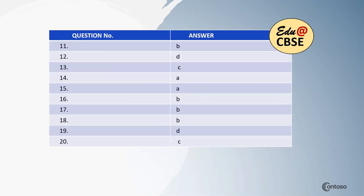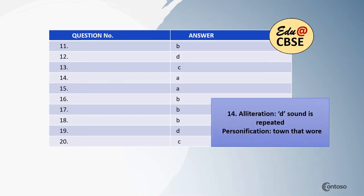These are the answers from 11th to 20th. For question 14, the literary device is alliteration and personification. You can recognize the alliteration — the 'd' sound is repeating. There is personification also: the line says 'the town that wore,' so wearing is a human quality, therefore it is personification.